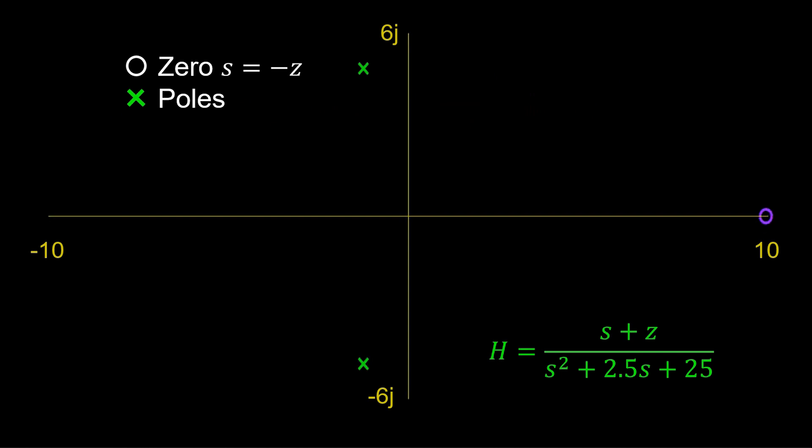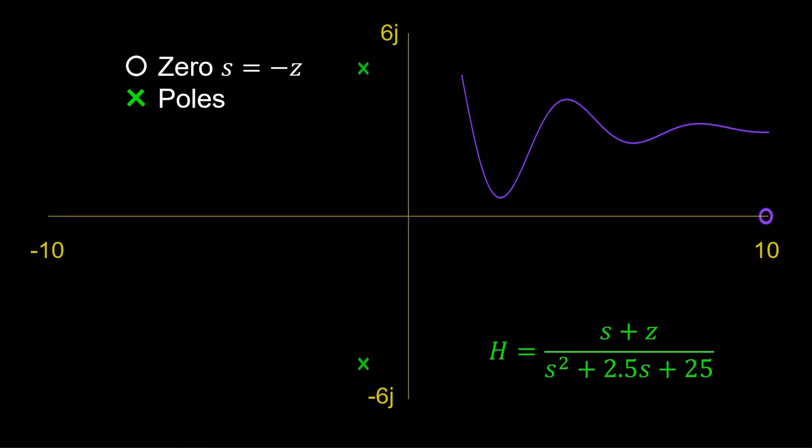Here are the poles of the single zero transfer function, H, on the real imaginary plane. We obtained the impulse response, which we plot simultaneously as the zero location moves leftward.